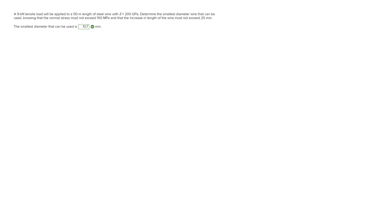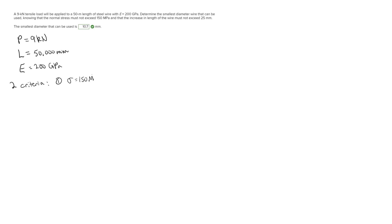For this problem we're looking for the smallest diameter that can be used. We are given a tensile load P equal to 9 kilonewtons, a length of 50 meters which converts to 50,000 millimeters, and a modulus of elasticity E of 200 gigapascals. There are two criteria that must be met: the normal stress must not exceed 150 megapascals, and the increase in length of the wire must not exceed 25 millimeters.